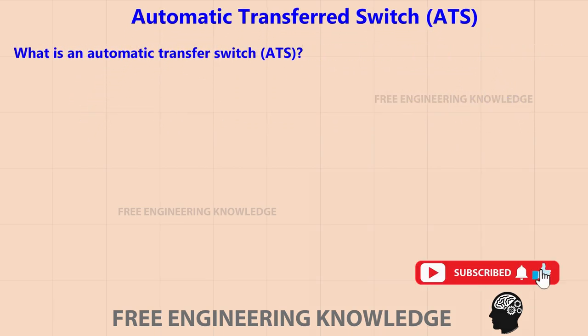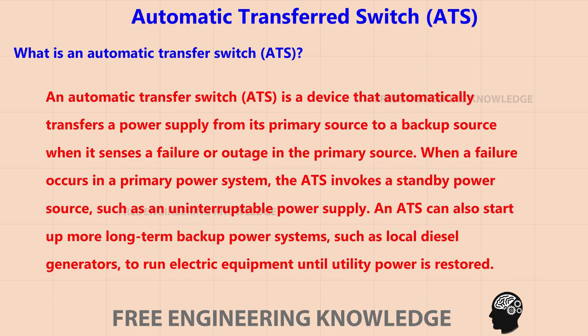An automatic transfer switch is a device that automatically transfers a power supply from its primary source to a backup source when it senses a failure or outage in the primary source. When a failure occurs, the automatic transfer switch invokes a standby power supply such as an uninterruptible power supply, or can start up longer-term backup systems like local diesel generators to run electric equipment until utility power is restored.